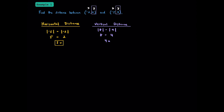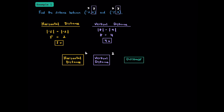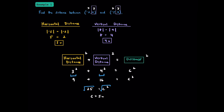Now that we have our horizontal distance and vertical distance, we can find the distance between these two points. Remember: squaring the horizontal and vertical distances and adding them together gives you the distance squared. Our horizontal distance was 3, so we write 3 squared plus, and our vertical distance was 4, so we write 4 squared, equal to C squared. 3 squared is 9 and 4 squared is 16. 9 plus 16 is 25, so 25 equals C squared. Taking the square root of both sides, C is equal to 5 units.